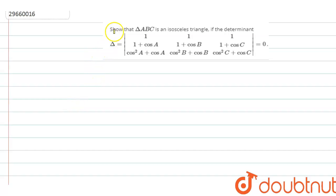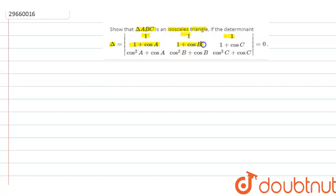So the question is: given that triangle ABC is an isosceles triangle, if the determinant delta equals 0, where delta is the 3x3 determinant with rows: [1, 1, 1], [1+cosA, 1+cosB, 1+cosC], [cos²A+cosA, cos²B+cosB, cos²C+cosC] equals 0.